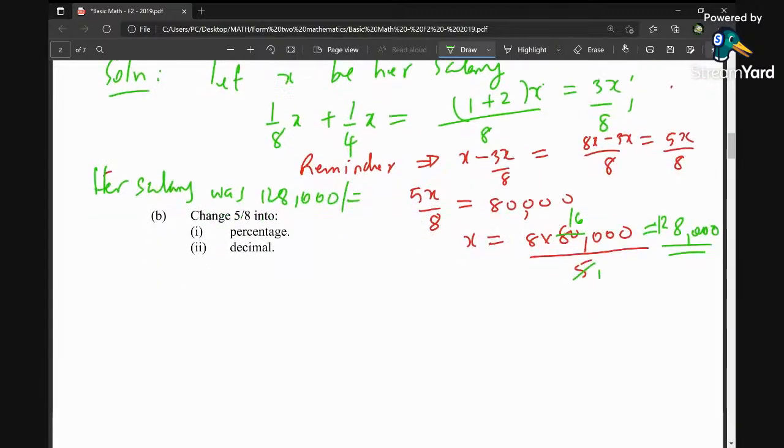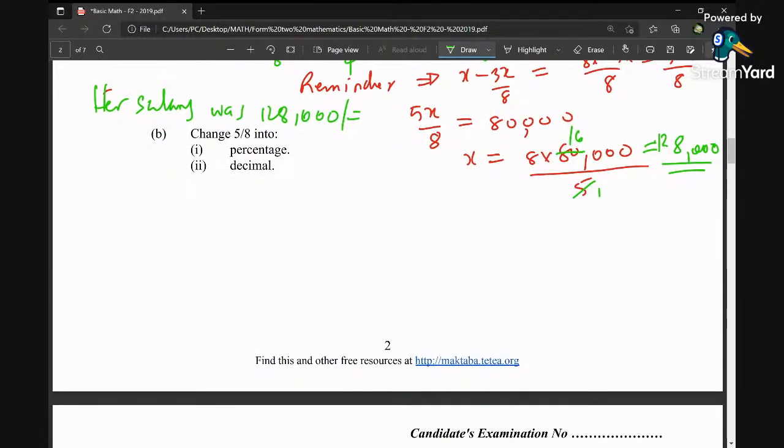Question 2b: we're supposed to change 5/8 into percentage. So 5 over 8 into percentage, you just multiply by 100 percent. You're going to get 500 divided by 8 percent. By 8, it is 6 for the 8, remain 20. 20 by 8 is 2, remain 4. 40 by 8 is 5. Equals 62.5 percent.